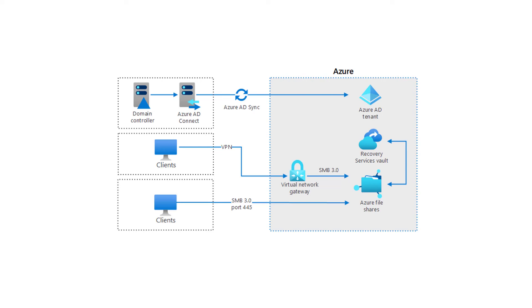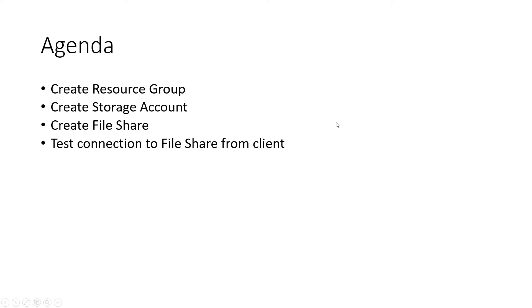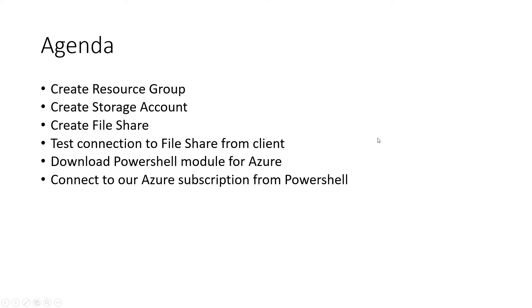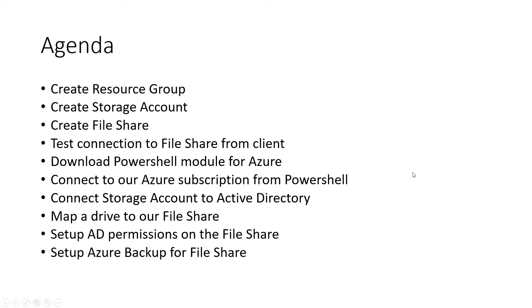Here's a diagram of what we'll be working on. First, we'll need to create our resource group. Second, we'll need to create a storage account within the resource group, and then we'll create the file share within the storage account. Then we'll test the connection from a Windows 10 client. We'll download the necessary modules for Azure and connect to our Azure subscription from PowerShell. Then we'll connect our storage account to Active Directory, map a drive to our file share from our on-premises client, set up AD permissions on the file share, and finally set up Azure backup for our file share.